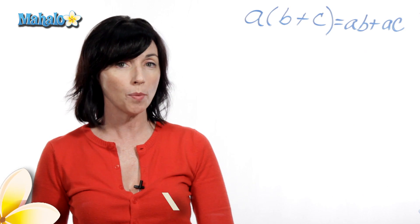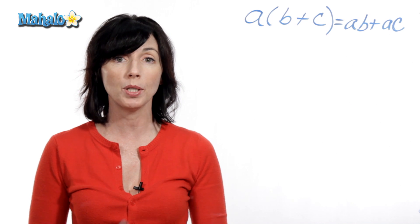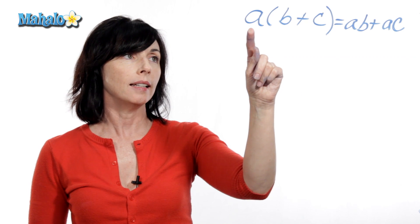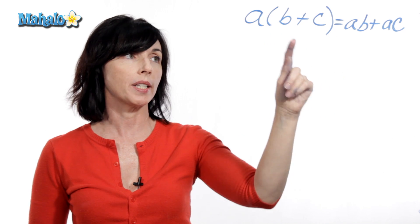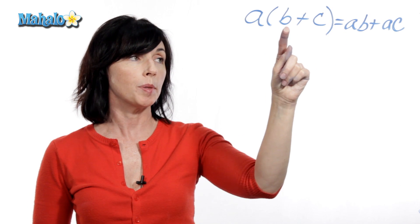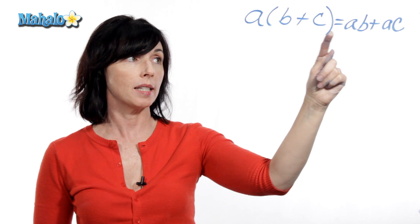The distributive property is one of several properties we have that governs how we do arithmetic. This is what it looks like. It says that a times the quantity in parentheses, b plus c, is equal to a times b plus a times c.